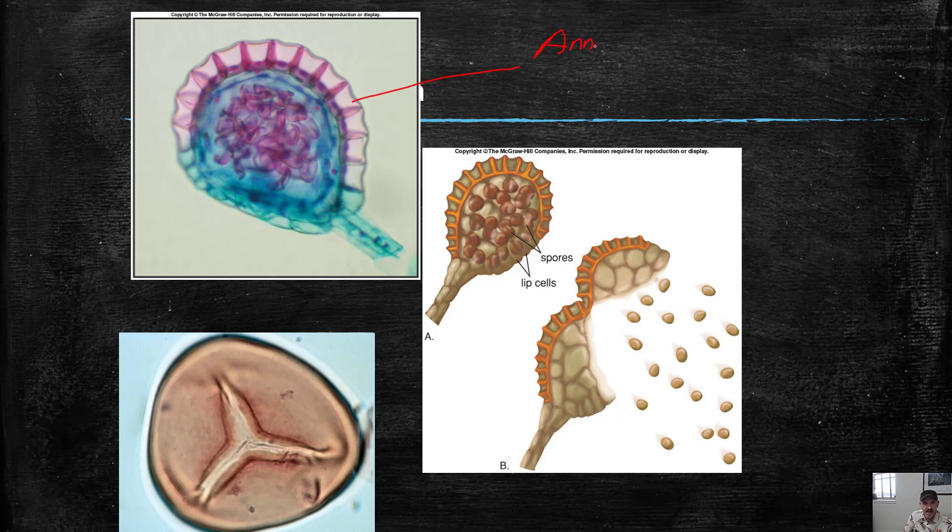And what it does is when it dries out, when these cells dry out, the side walls here are thicker than the top walls. So these top walls suck in when this thing dries out. And that causes that whole thing to crack open like it collapses like an accordion. And it causes the whole sporangium to crack open like we see in this picture here. And it cocks back and then it actually flings forward and it throws the spores out into the environment.